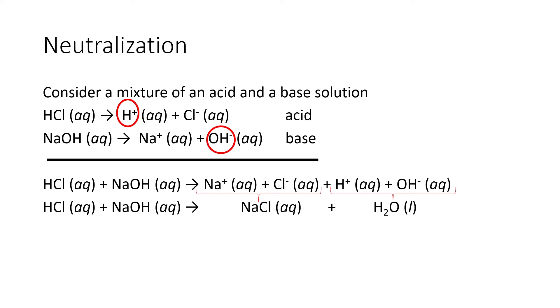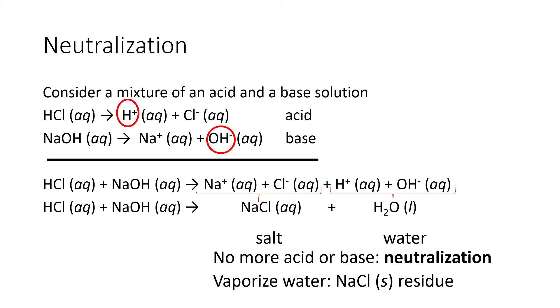So if you look at the products of this combination of an acid and a base solution, what do you get? You have a salt solution and water. In other words, there's no more acid or base in the product solution. That's why we call it a neutralization. We would say that the acid and the base solutions neutralized each other. The resulting solution is simply salt dissolved in water. So if you were to vaporize the water, you'd be left with the sodium chloride solid as a residue. In other words, the ions would repack into the typical crystal structure of an ionic compound.